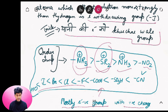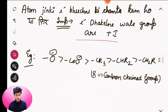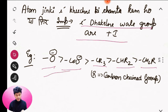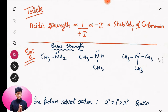Atoms जिनकी electron खींचने की क्षमता कम हो, या फिर electron धकेलने वाले group होते हैं, उनको कहते हैं Plus-I group। जैसे कि O पर negative charge (CO⁻), CH₃, CH₂R, CHR₂, CR₃ — यानि जितने ज़्यादा carbon होंगे उतना ज़्यादा Plus-I effect होगा। और अगर carbon के साथ negative charge हो तो वह सबसे ज़्यादा Plus-I effect करता है।